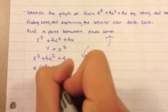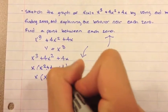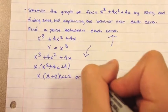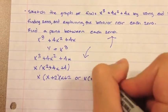x plus 2, x plus 2, and that's also equivalent to x times x plus 2 squared.